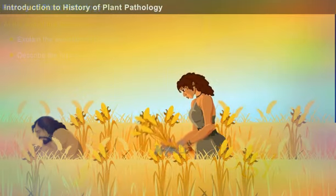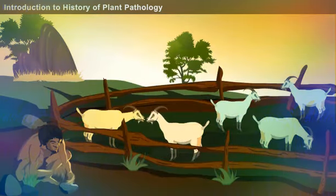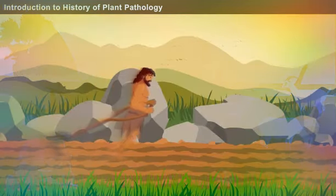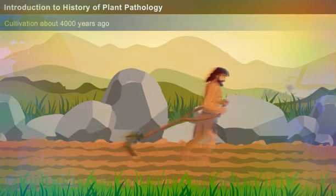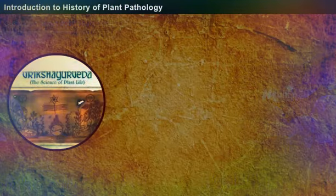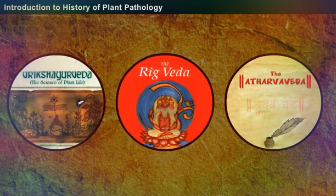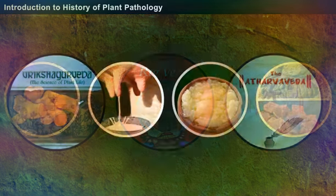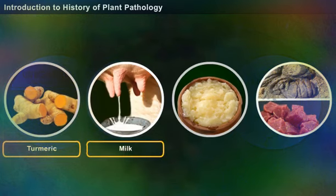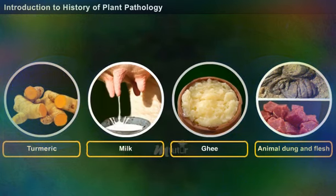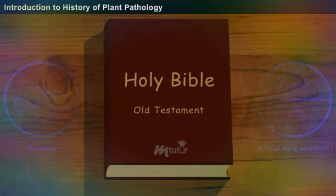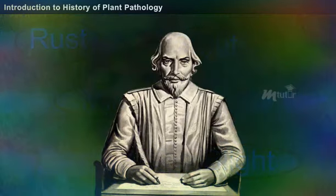The science of plant pathology originated when the human race began the practice of crop cultivation about 4000 years ago. Ancient Indian literature recorded the occurrence of plant diseases and protective measures, including the use of organic materials such as turmeric, cow's milk, ghee, animal dung, and flesh. Symptoms of plant diseases were also found in the Old Testament of the Holy Bible and Shakespeare's writings.